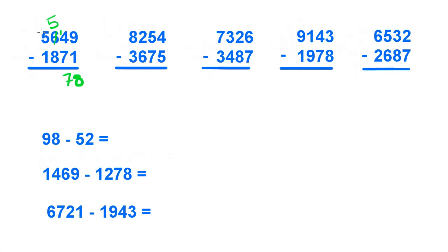5 minus 8, cannot do that, we have to borrow from the 5 again, make that a 6, 15. So 15 minus 8 is 7, and 6 minus 1 is 5. So there's our answer.